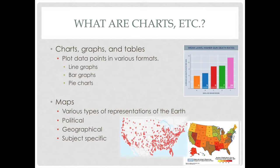We will also be looking at maps and how those are important — basically various types of representations of the earth. These could be political, with lines such as country outlines, state outlines, provinces, cities, counties, etc. We might also have geographical maps based on where mountains, lakes, or rivers are. And then the thing we're going to be seeing the most of are subject-specific maps — how maps overlay with various governmental or economic issues.